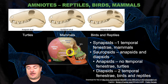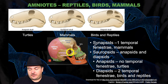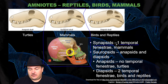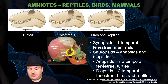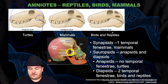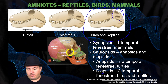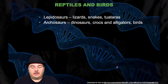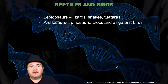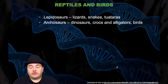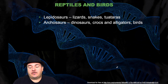Let me explain what that's actually saying. The synapsids — those are mammals — have one temporal fenestra, as you can see here. The anapsids — those are the turtles — don't have that structure. Whereas the diapsids — those are birds and reptiles — have two temporal fenestrae. The reptiles and birds are divided into the lepidosaurs, which are lizards, snakes, and tuataras, and the archosaurs, which are dinosaurs, crocodiles, alligators, and birds.